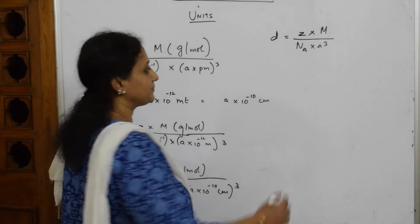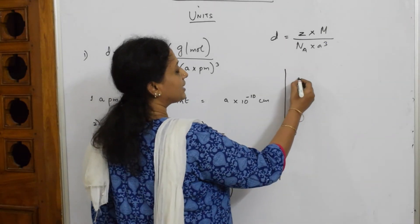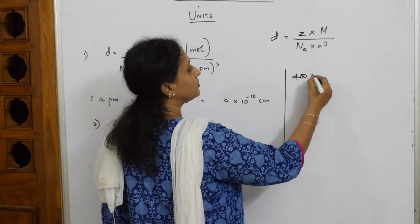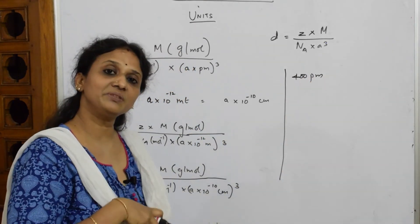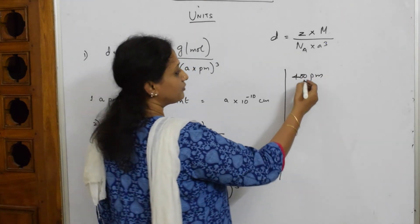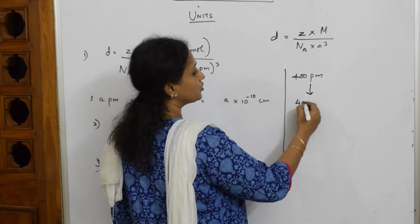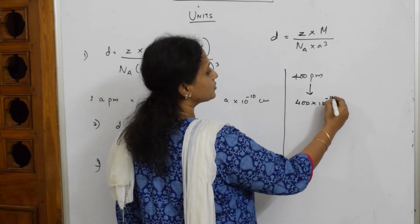Let me take one small example and see. Suppose if I write 400 picometer, how should I convert this into meter and centimeter cube? Now, 400 picometer if I write, it is 400 into 10 raised to minus 12 meter.